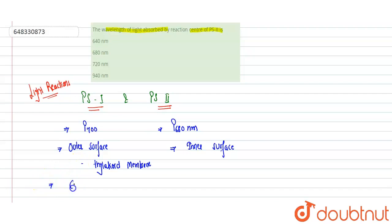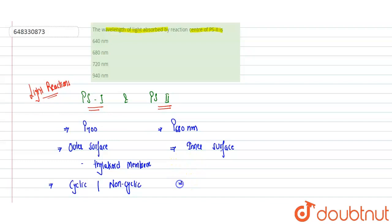Photosystem 1 involves both cyclic as well as non-cyclic photophosphorylation — these are the light reactions. While in the case of Photosystem 2, it is only involved in cyclic photophosphorylation.